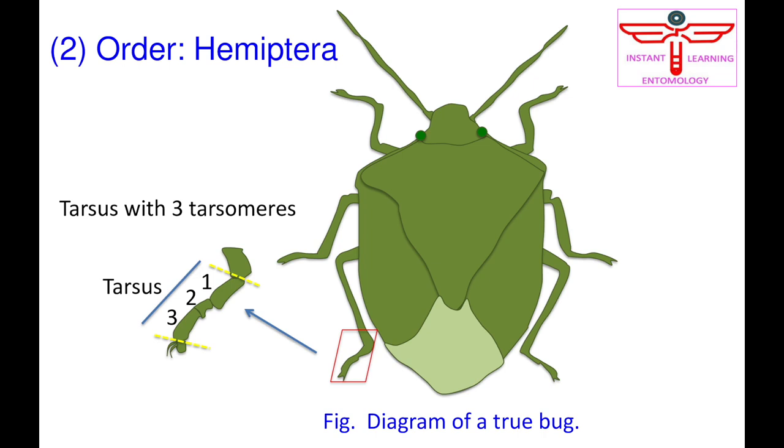Order Hemiptera — the true bugs — including scale insects, mealybugs, white flies, leafhoppers, aphids, cicadas, and others.